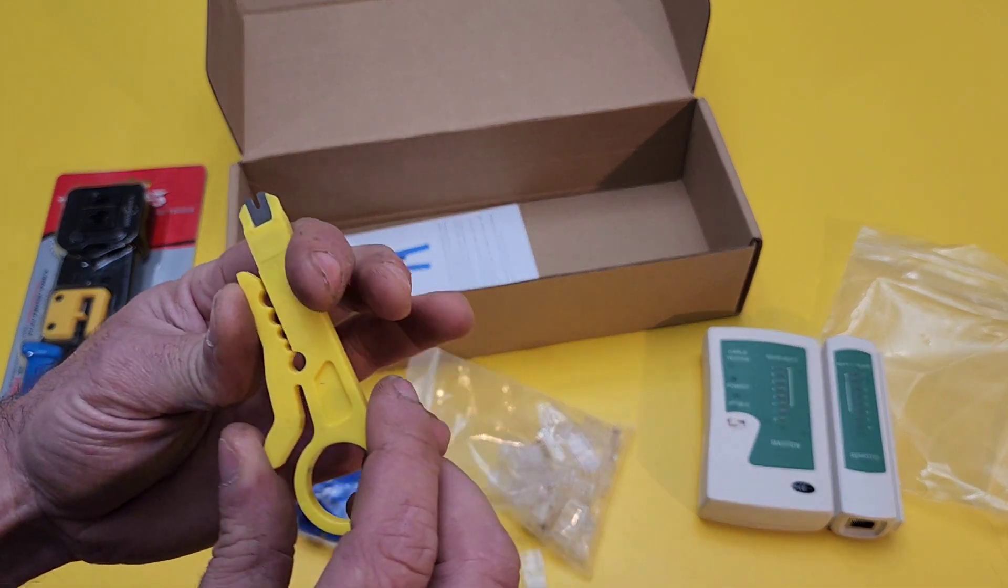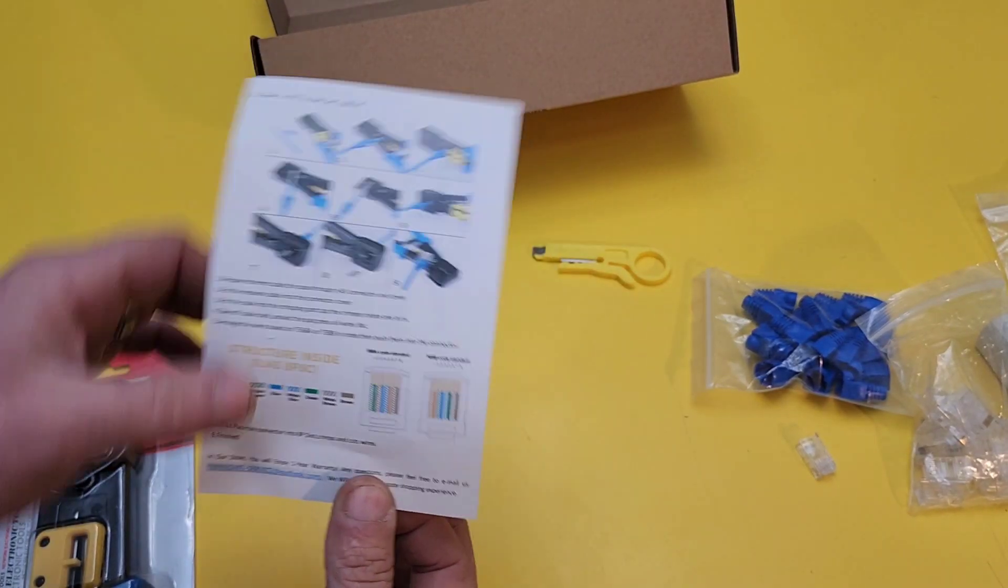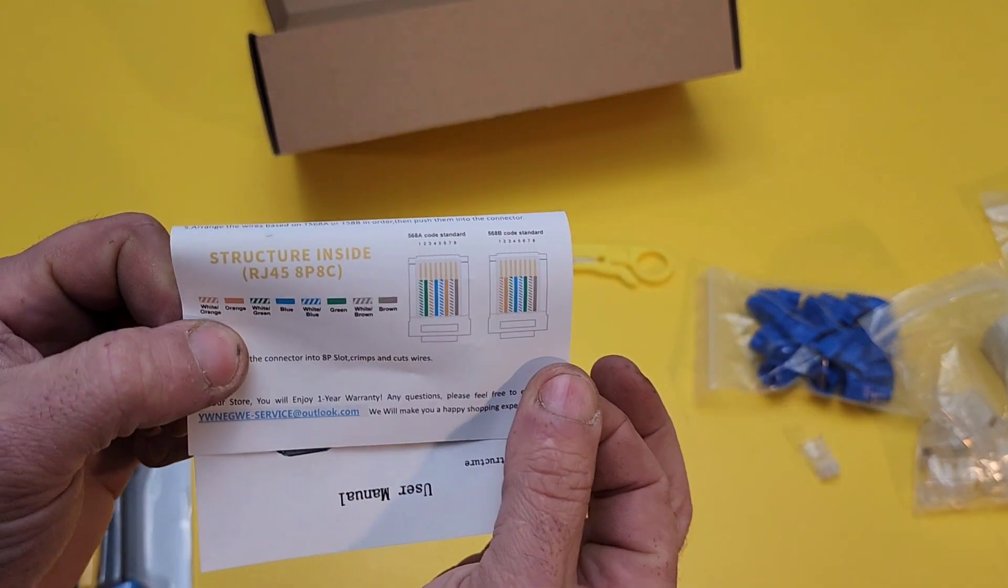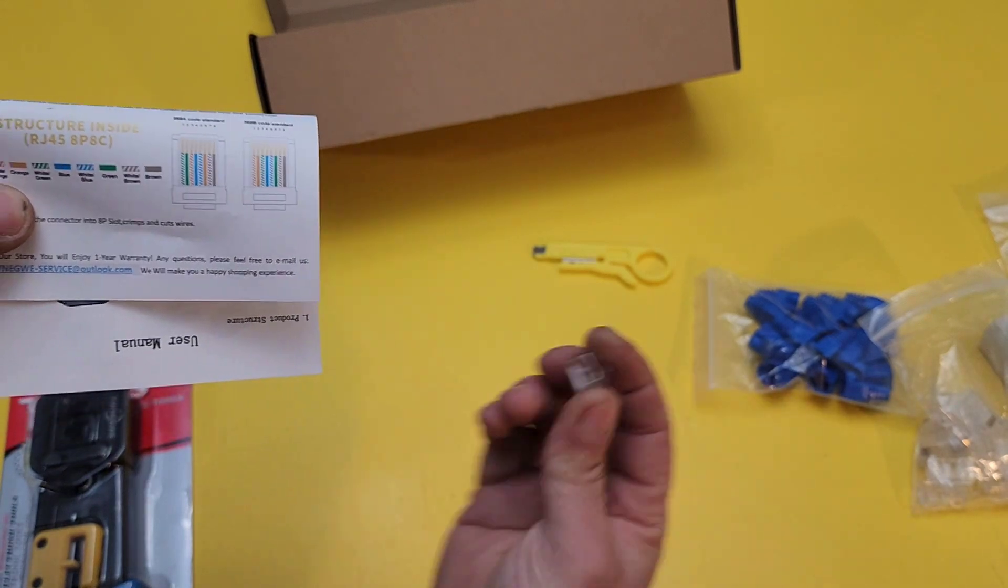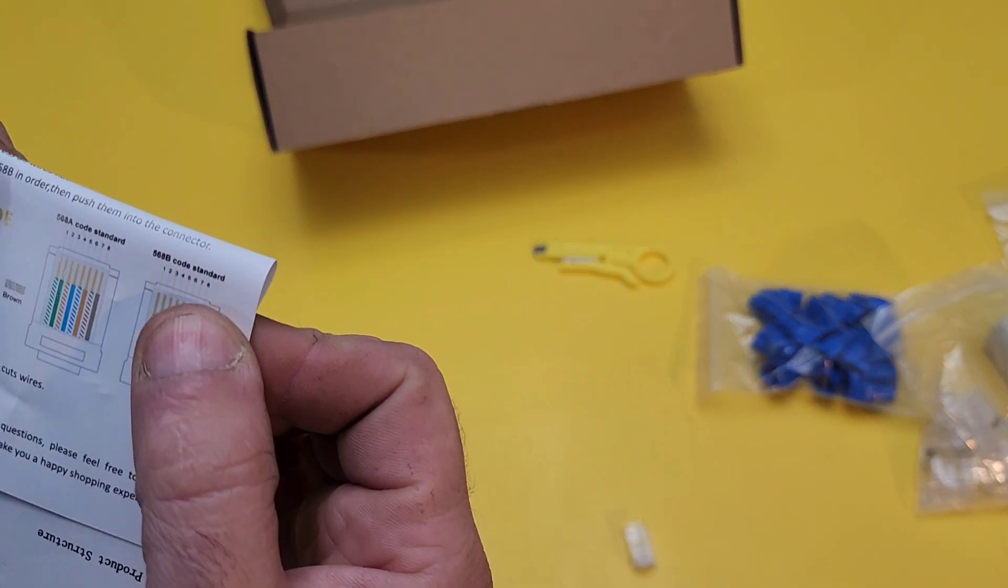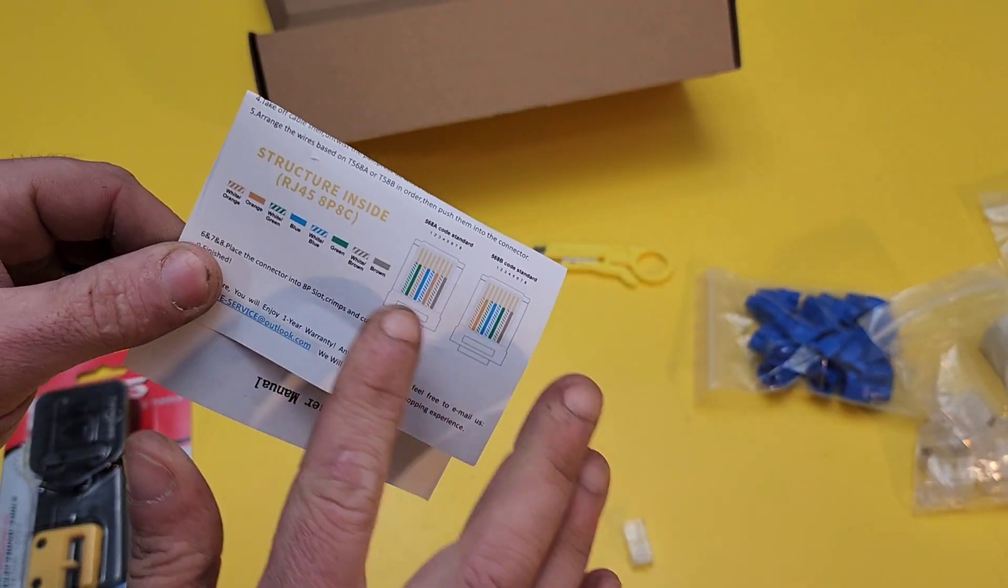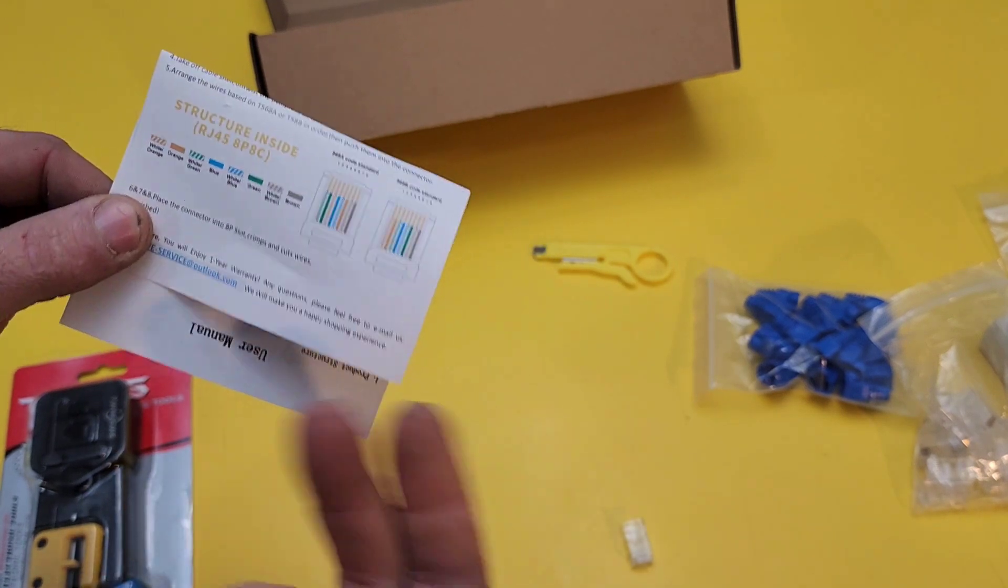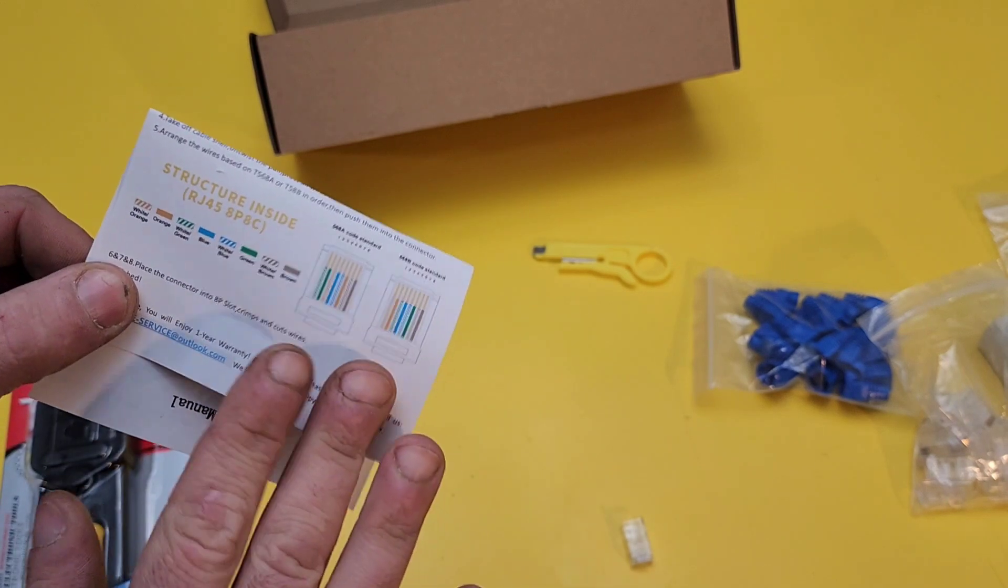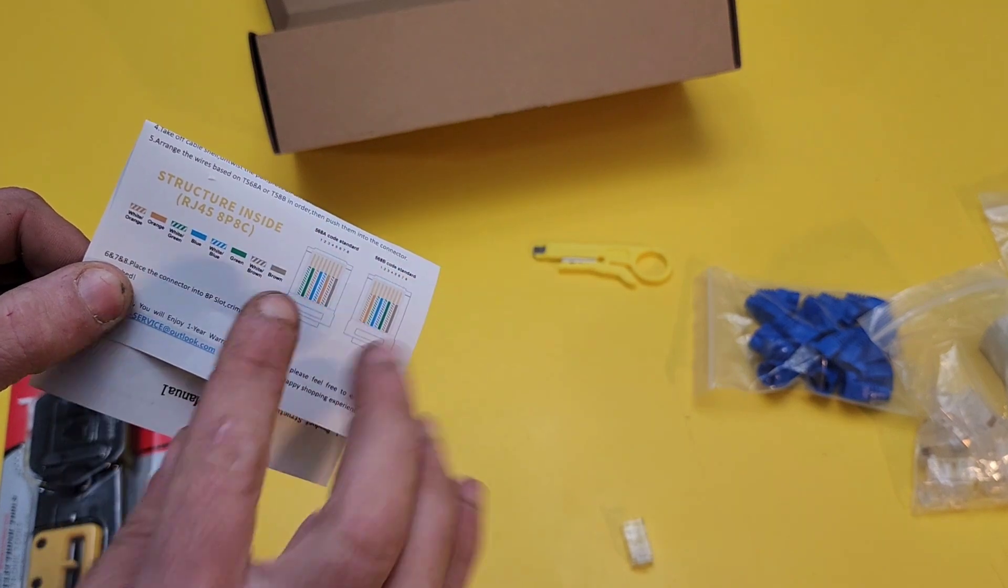And we've got this tool here. And also, it's got a little manual, which is really helpful. It'll tell you how to structure the cables inside of the RJ45. I always use the 568B code standard. You could use either one. I always use B. Everybody that I work with, they all use B as well. But it doesn't really matter just as long as you make sure that you do both ends, either A or B.